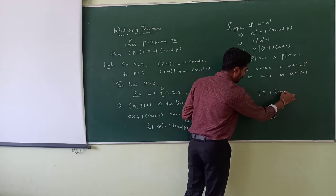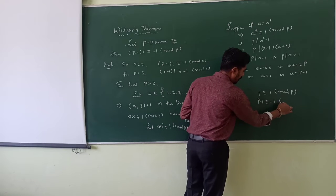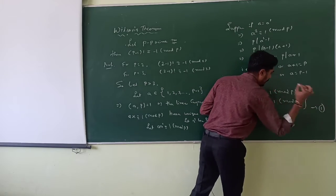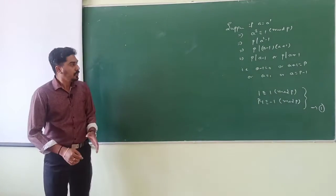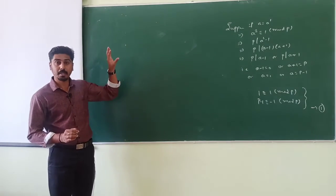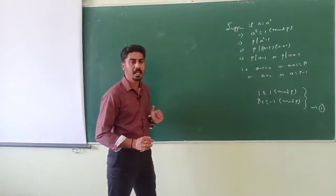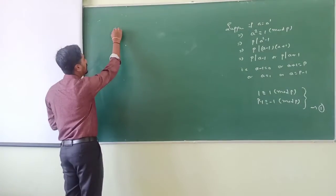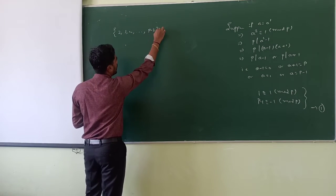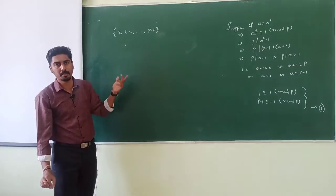Now, 1 ≡ 1 (mod p) and (p minus 1) ≡ minus 1 (mod p). Starting with the set {1, 2, 3, ..., p minus 1}, which has p minus 1 elements, and eliminating these two elements, we get the set {2, 3, 4, ..., p minus 2}, which contains p minus 3 elements.